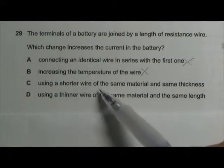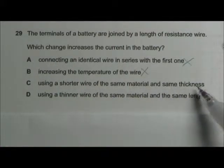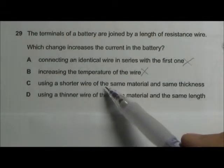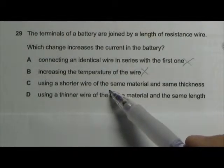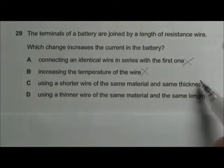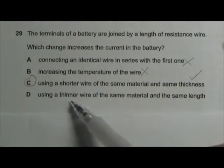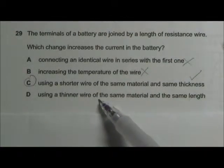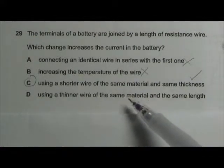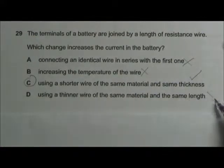Using a shorter wire of the same thickness is going to reduce the resistance of the wire. Hence, the current will increase. So the answer is C. Using a thinner wire is going to increase the resistance, so this will decrease the current. So D cannot be the answer as well. Hence, the answer is C.